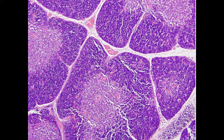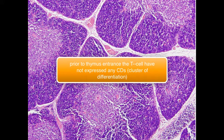Once your T-cells have left the bone marrow, they will start to migrate towards thymus. But they don't have any specific CD markers. CD stands for Cluster of Differentiation.